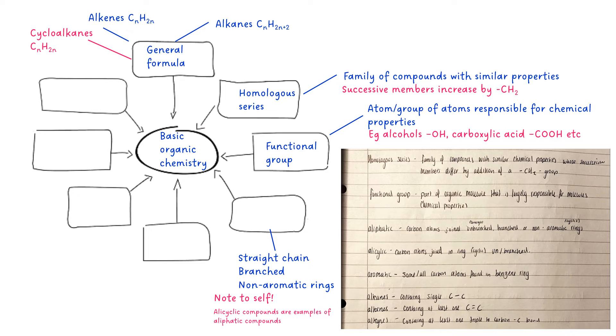The next thing is straight chain, branched, and non-aromatic rings. That is aliphatic compounds, and then alicyclic has a crossover between aliphatic, doesn't it? So non-aromatic rings would be alicyclic compounds. There's a note to self: alicyclic compounds are examples of aliphatic compounds. So sometimes people don't always realize that they kind of share a definition there.